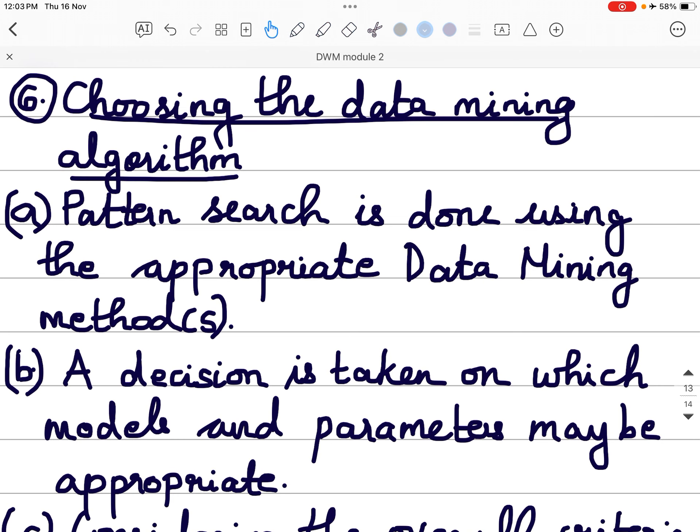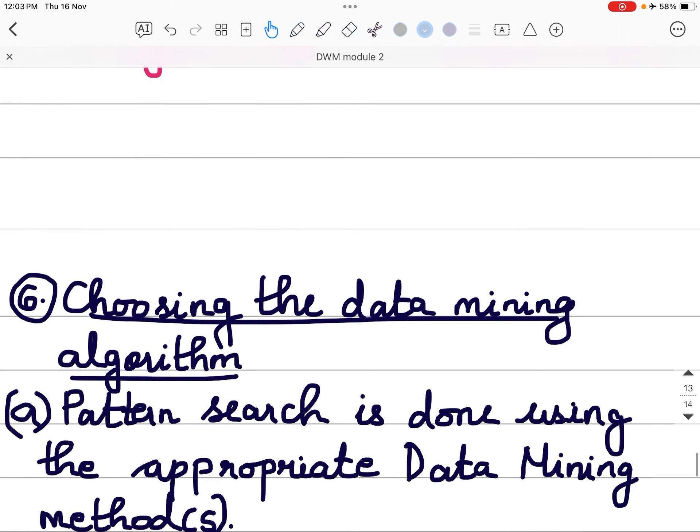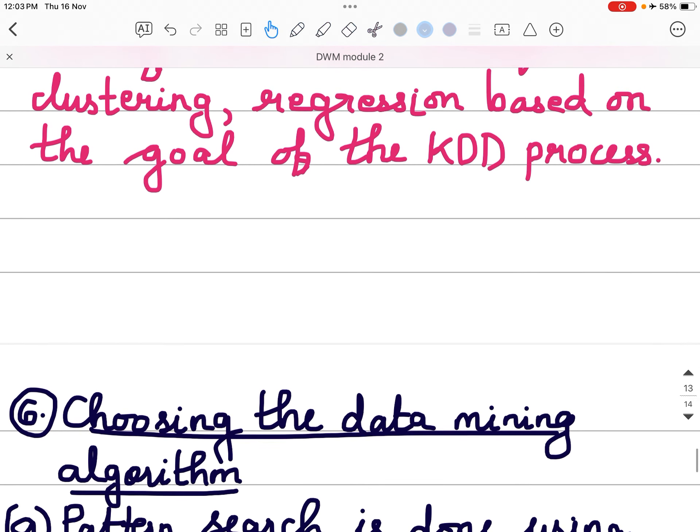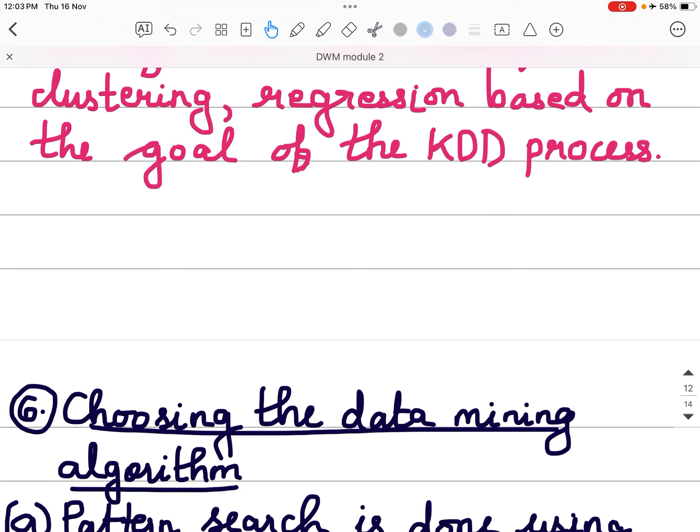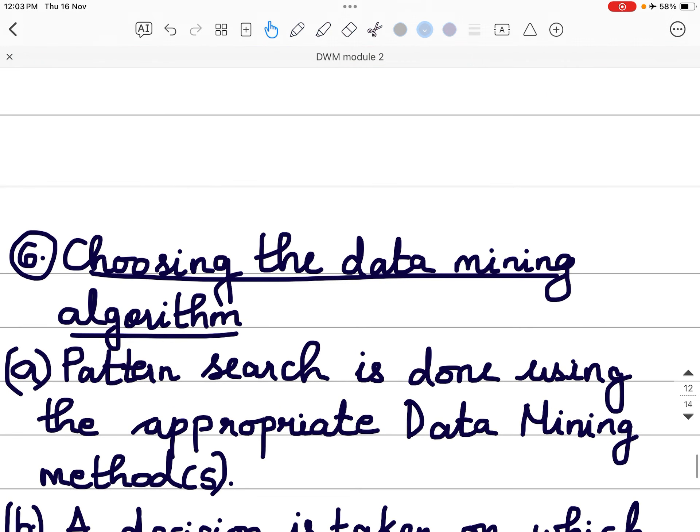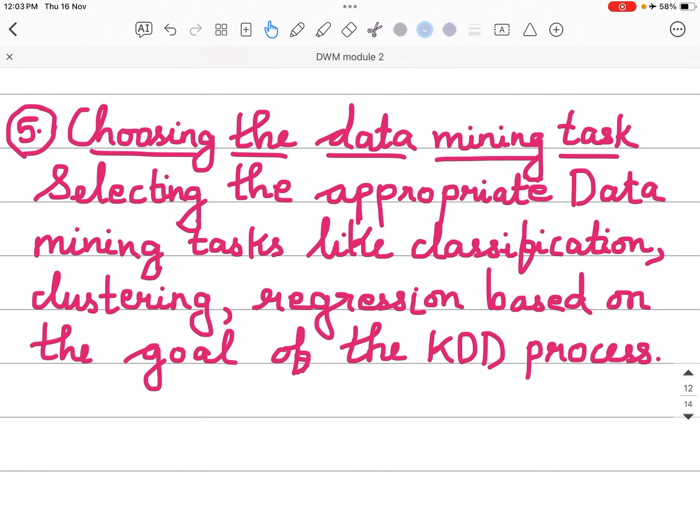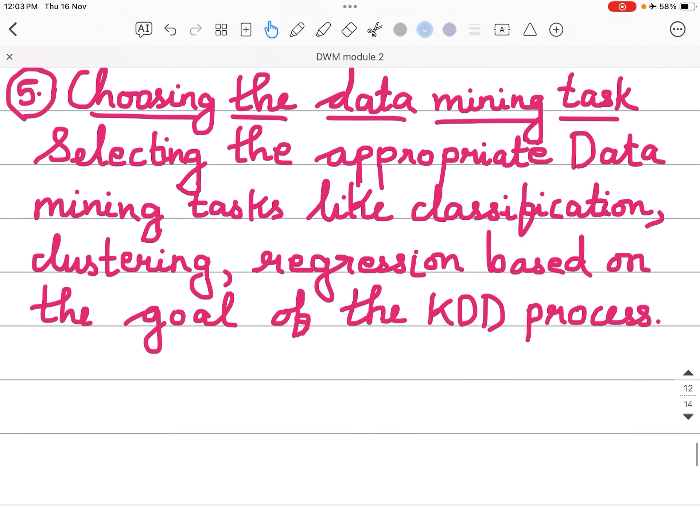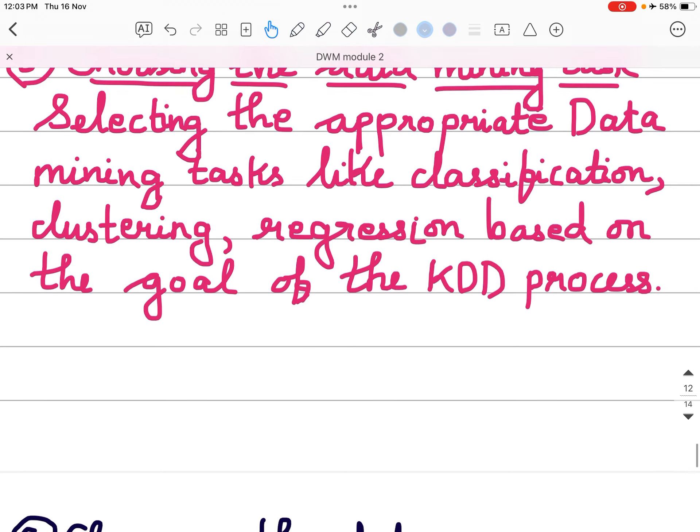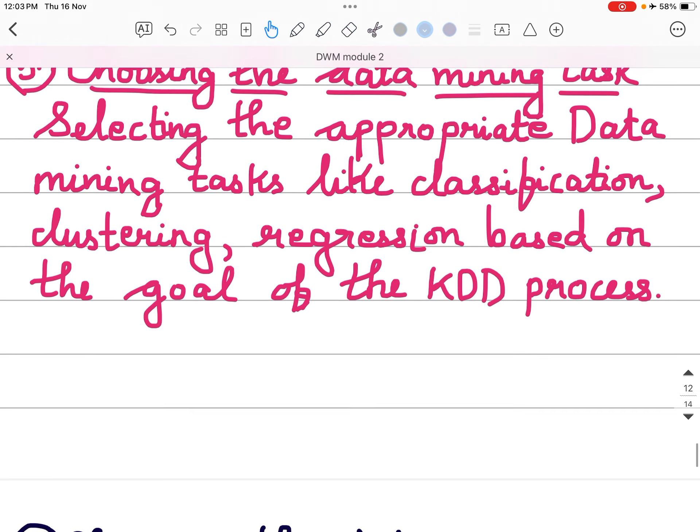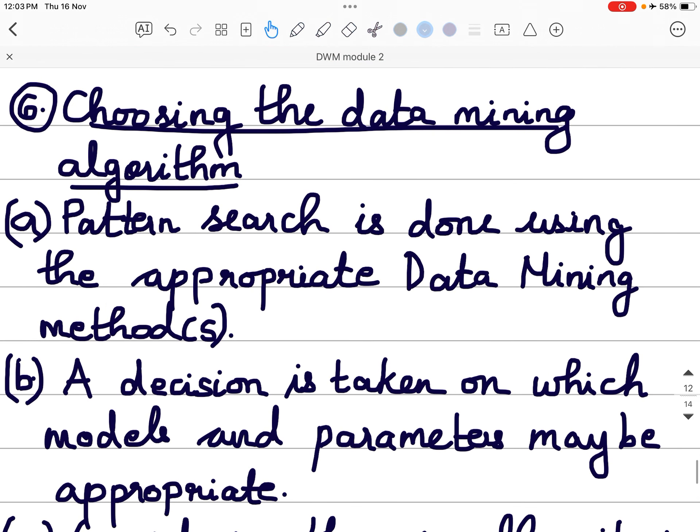Sixth is choosing the data mining algorithm. You have known what kind of data mining task you want to perform, whether you want to perform classification, clustering, or regression. After knowing what task you want to perform, you will now choose the algorithm. In classification, we have the Naive Bayes classification. In clustering, we have K-means and K-mediator. According to that, we will choose the algorithm.